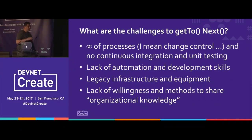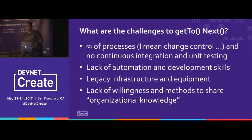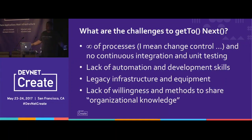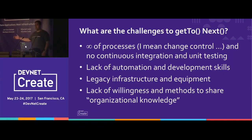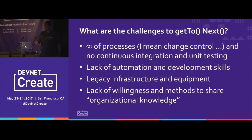The challenges: there are a lot of processes and no continuous integration. People on the business side are not catching up to IT — you speak about Travis CI or Circle CI and they ask what that is. There is a lack of automation and development skills, so anytime you hear someone who wants to learn, share as much knowledge as possible to inspire them. Legacy infrastructure is also a big issue — what if you have all legacy equipment bought from Cisco ten years ago? If you bought a switch it may not have an API.